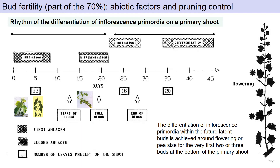It is important to understand that while the primary shoot is growing, at the axil of each leaf you have a future latent bud. At flowering, we know and have observed that the very first bottom latent buds are already differentiated. So around flowering, around pea size, you have already achieved the differentiation of the bottom latent buds, which represent the next year's crop.